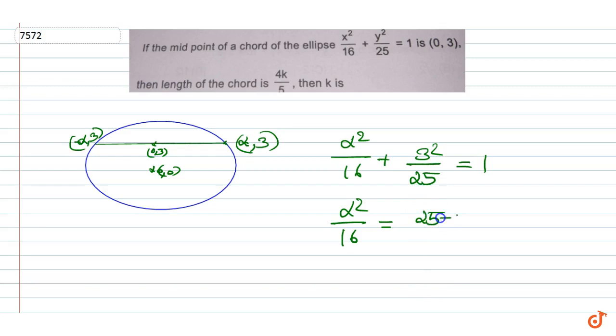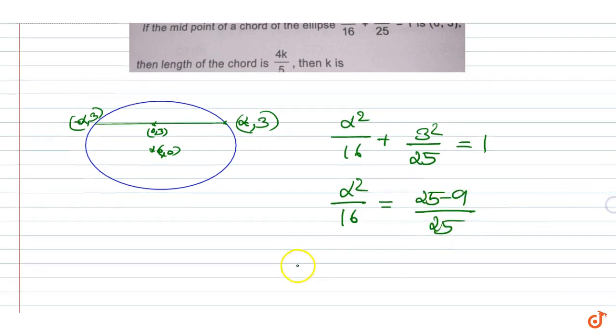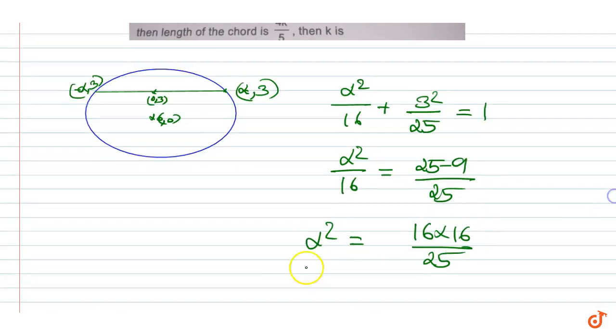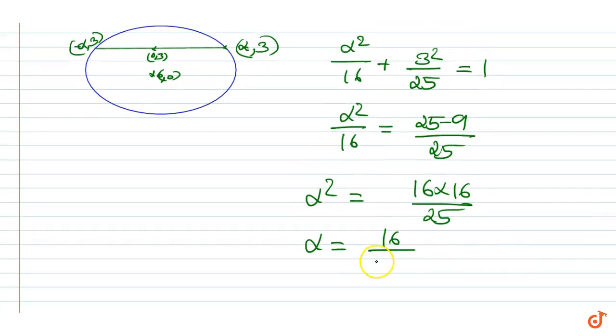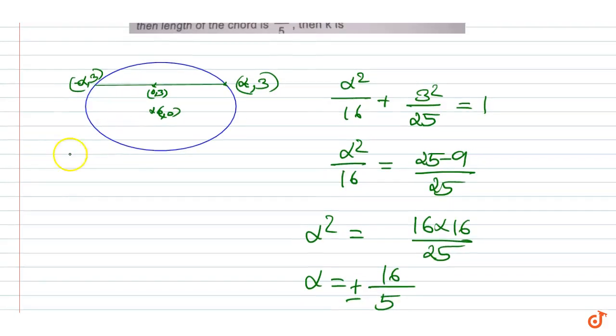25 minus 9 upon 25, giving alpha squared is equal to 16 times 16 upon 25. That is alpha equal to 16 upon 5, plus or minus.